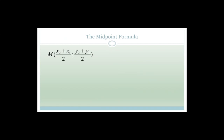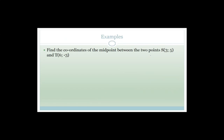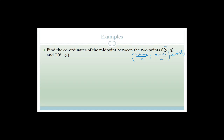Now let's talk about the midpoint formula. The midpoint formula is very easy because all we're doing is finding the average of both the x values and the y values. It says: find the coordinates of the midpoint between the two points S(3, 5) and T(6, minus 3). The midpoint is (x1 plus x2 over 2, y1 plus y2 over 2). This formula is on your formula sheet - no need to memorize it.